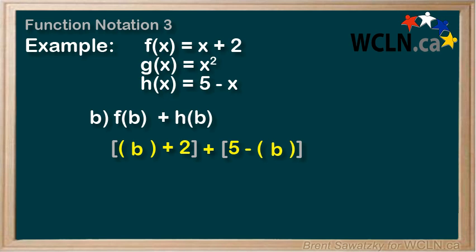And we'd have f(b) + h(b) = b + 2 + 5 - b. And now we can bring together the like terms and the b's actually cancel each other out. And we're left with 7.